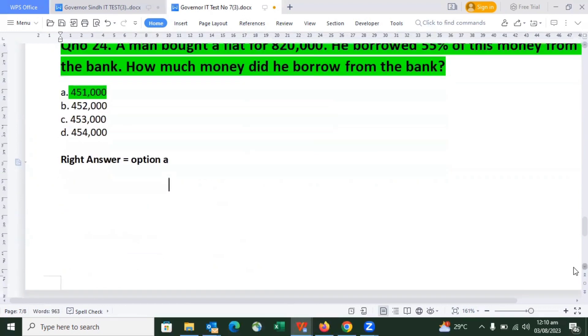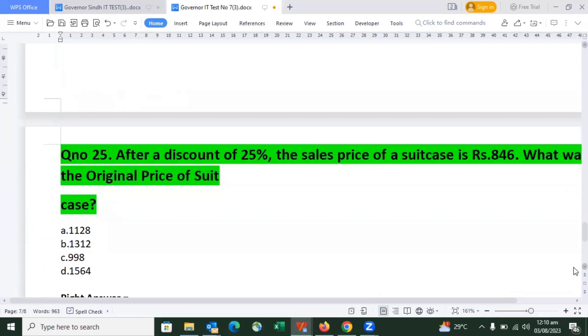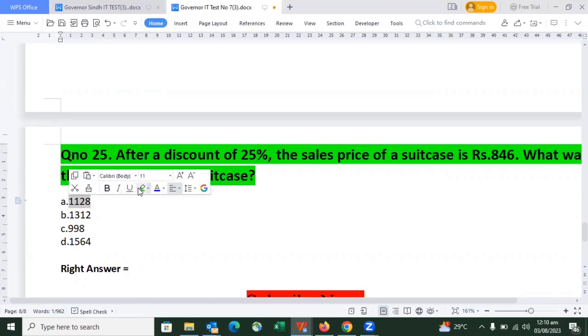Last but not least, a very important question: After a discount of 25%, the sales price of a suitcase is Rs. 846. What was the original price of the suit case? The answer is 1128, which is option C.